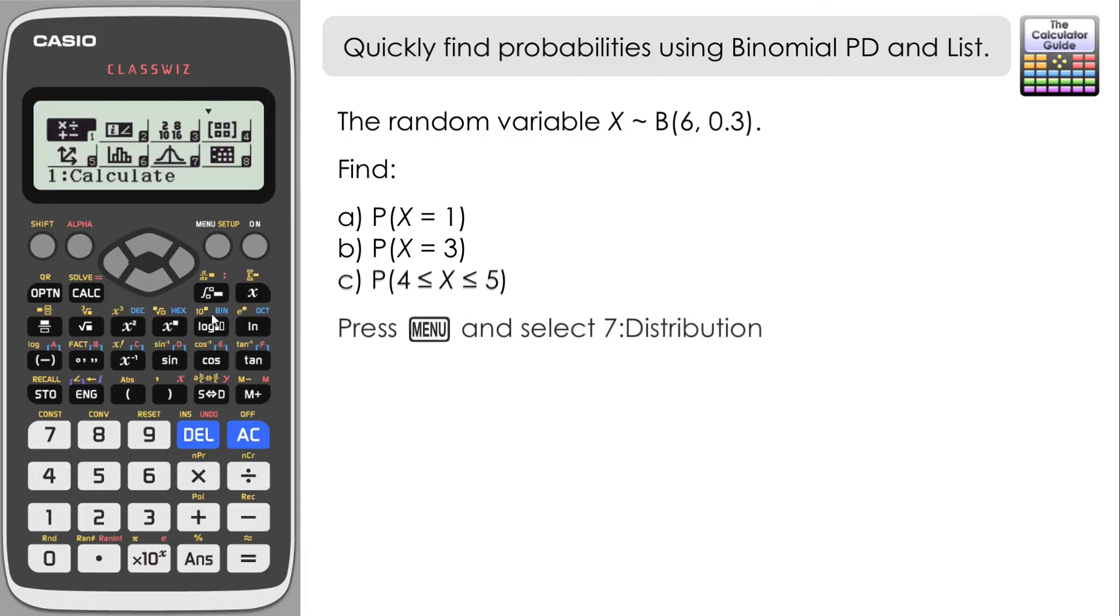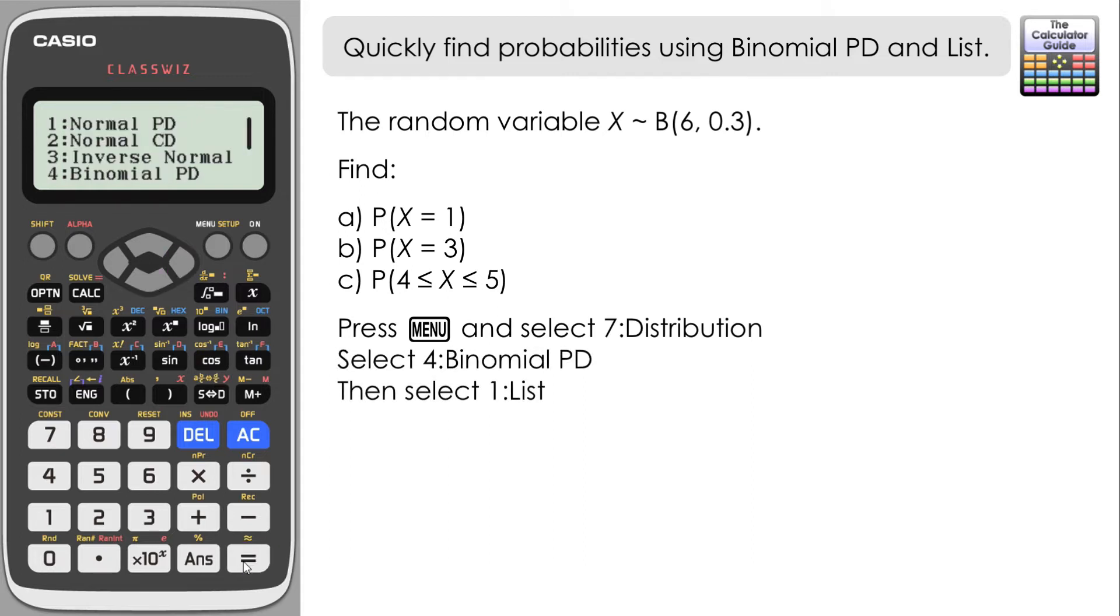So from the menu, it is distribution. So navigate to there or press 7. And then on the first page, we want option 4 binomial PD. And we want 1 for list.